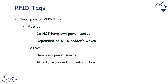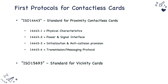RFID tags have two major classifications: passive RFID tags and active RFID tags. Passive RFID tags do not have their own power source — only when the tag comes in vicinity of a reader does it power up and transmit the stored information. Active RFID tags have their own power source and can broadcast information to the reader. ID cards and contactless cards are generally passive RFID tags, though recently active RFID tags are also being used for contactless payment cards.